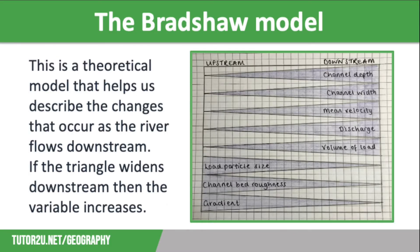You can see these changes using the Bradshaw model. This is a theoretical model that helps us describe the changes that occur as a river flows downstream. It is shown as a series of triangles — if the triangle widens downstream it means that the variable increases. According to the model shown on screen, channel depth and width, along with mean velocity, discharge, and volume of load all increase as the river flows from source to mouth.